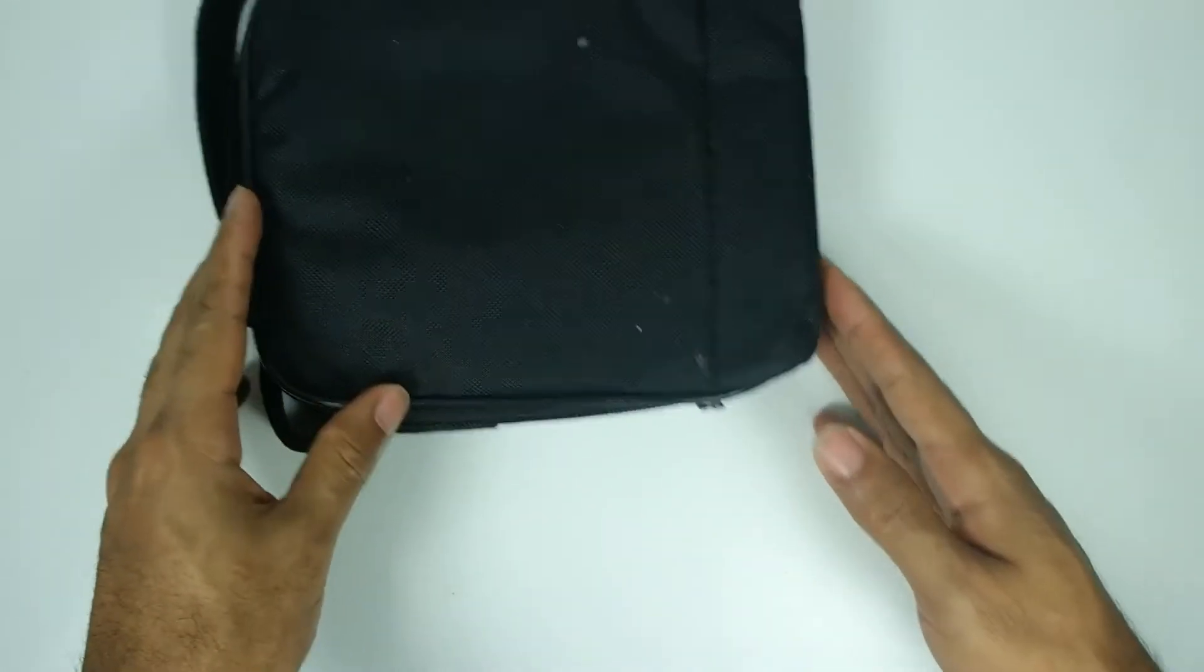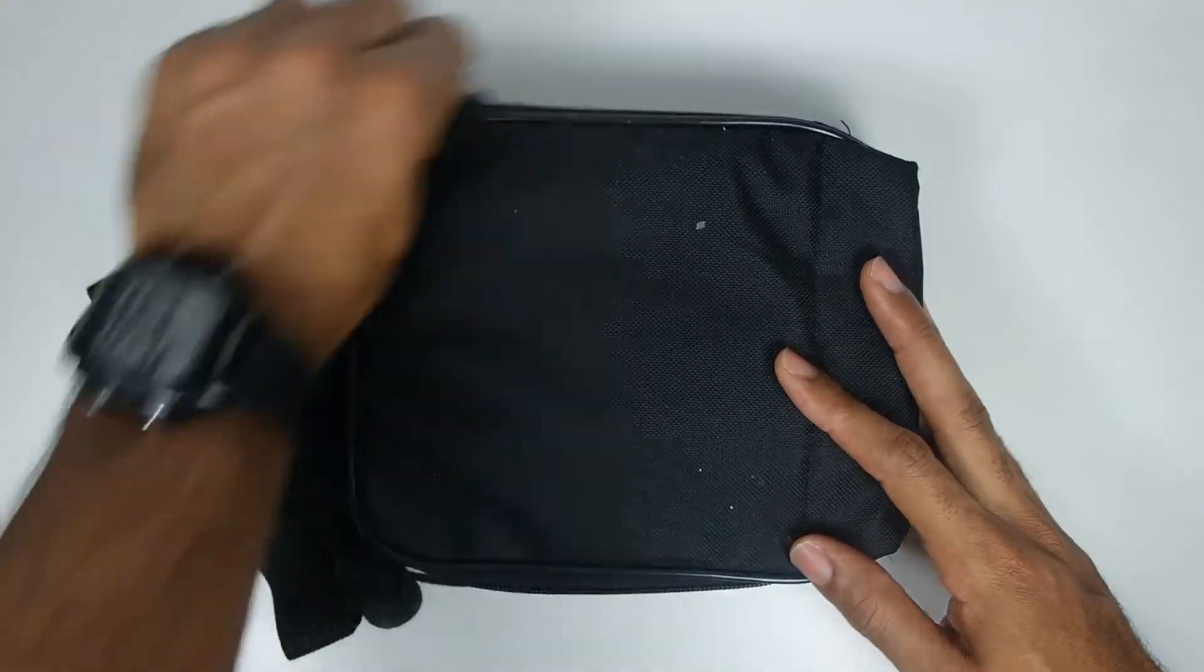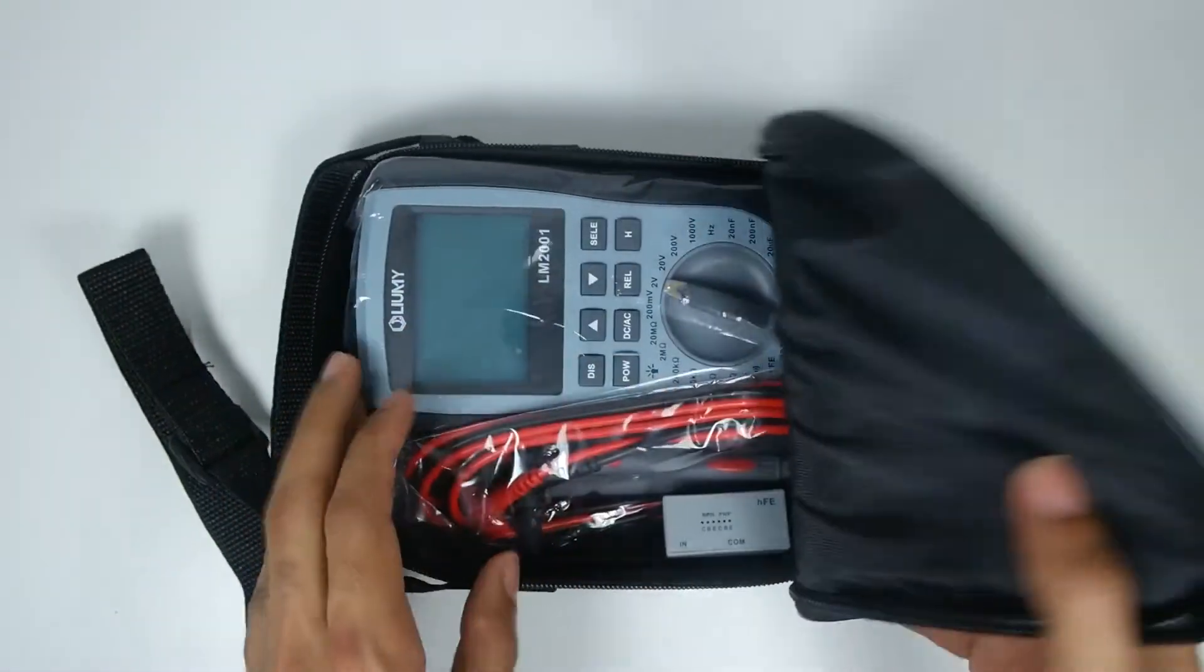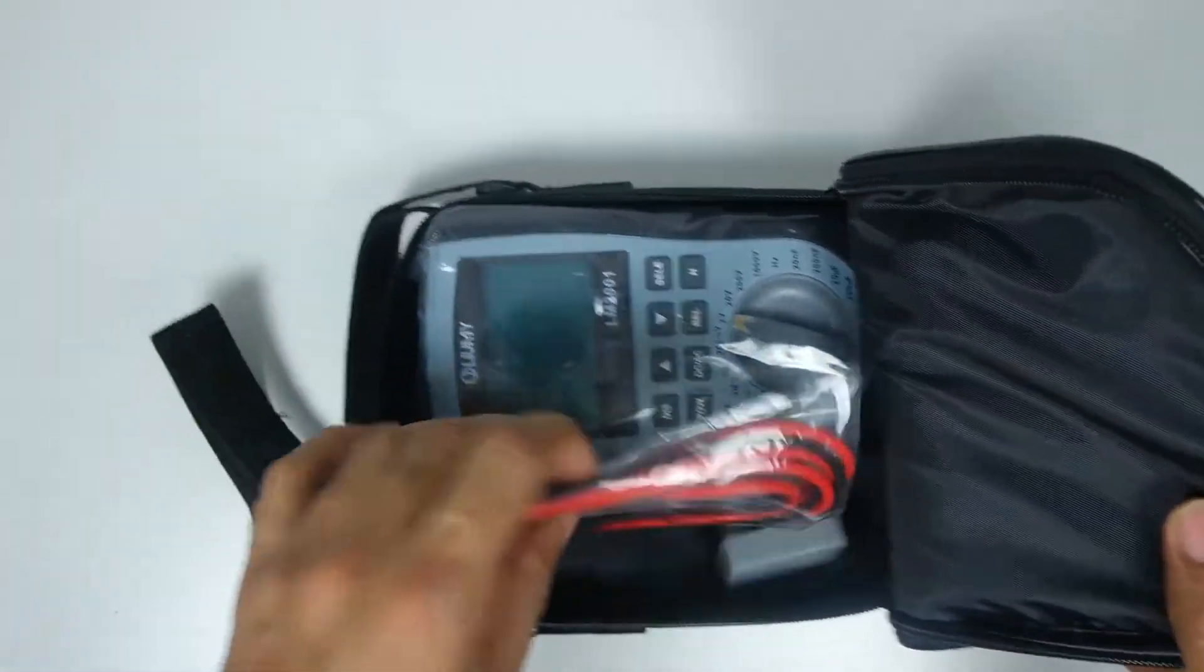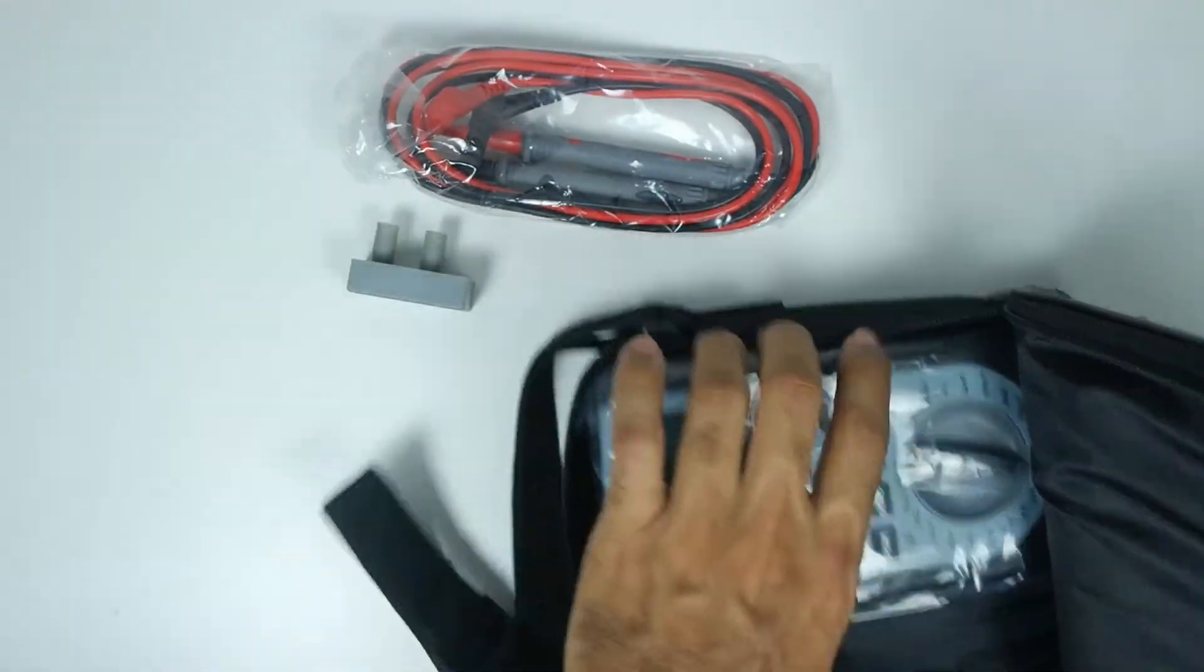Inside of the box we can find the multimeter inside of a pouch and also the instructions. Here we have the multimeter inside of the pouch, and inside of the pouch we have the multimeter, the leads for the multimeter, as well as the adapter to measure the amplification of BJT transistors.